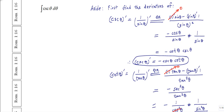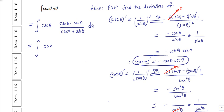In trying to evaluate the integral of cosecant theta, as we did in the case for secant, I'm going to write this as the integral of cosecant theta times cosecant theta plus cotangent theta, divided by cosecant theta plus cotangent theta, d theta. Multiplying out the top gives us cosecant squared theta plus cosecant theta times cotangent theta, over cosecant theta plus cotangent theta, d theta.